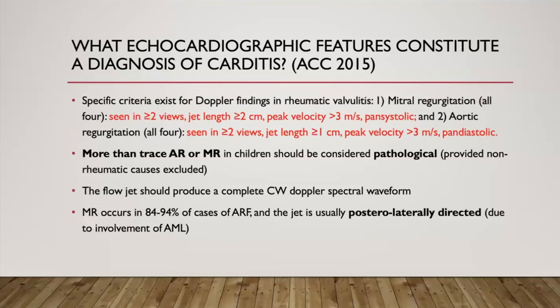Specific echocardiographic criteria exist for carditis. The most commonly affected valves in acute rheumatic fever are the mitral and aortic valves. For mitral regurgitation, all four criteria must be met: seen in two or more views, jet length more than 2 cm, peak velocity more than 3 m/s, and it should be pan-systolic MR. For aortic insufficiency, similarly: seen in two or more views, jet length more than 1 cm, peak velocity more than 3 m/s, and it should be a pan-diastolic Doppler finding.